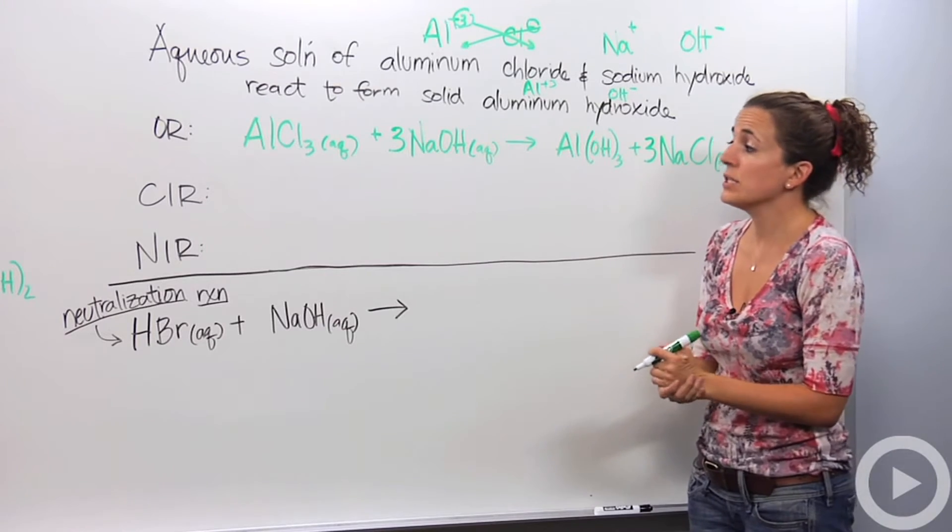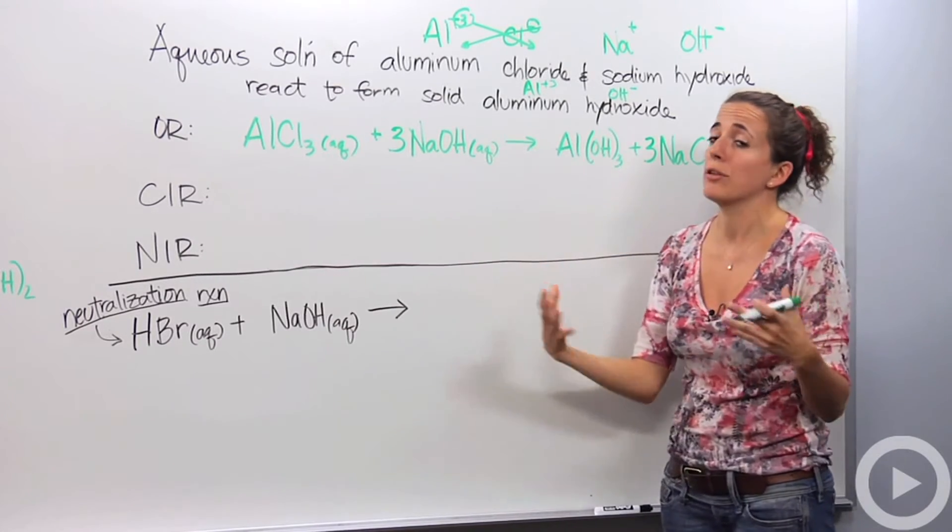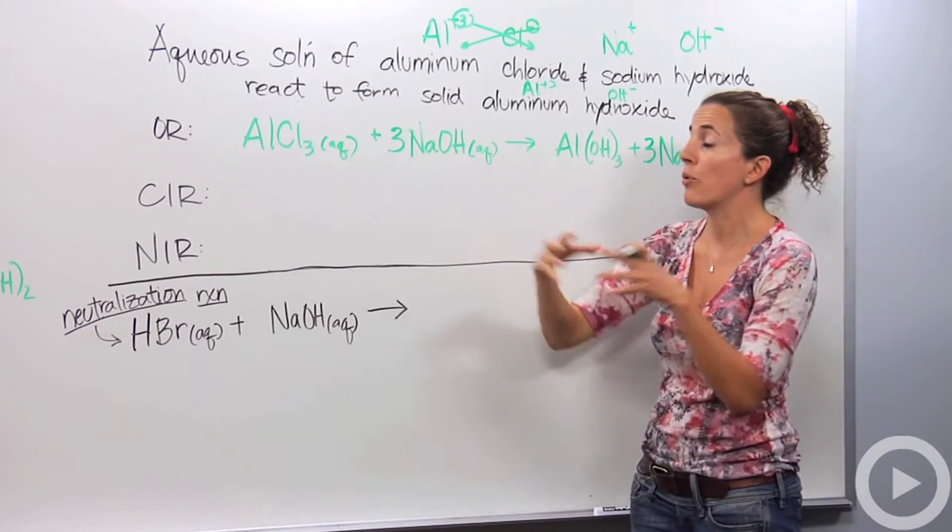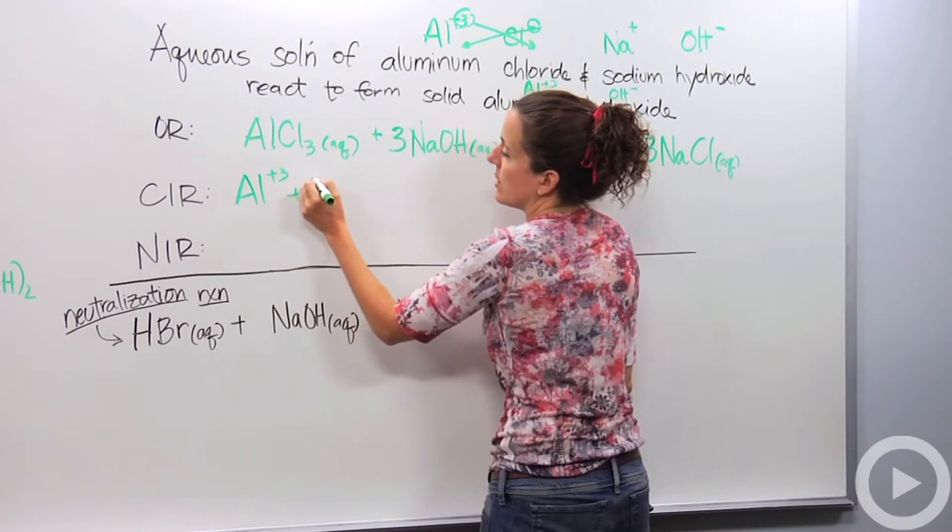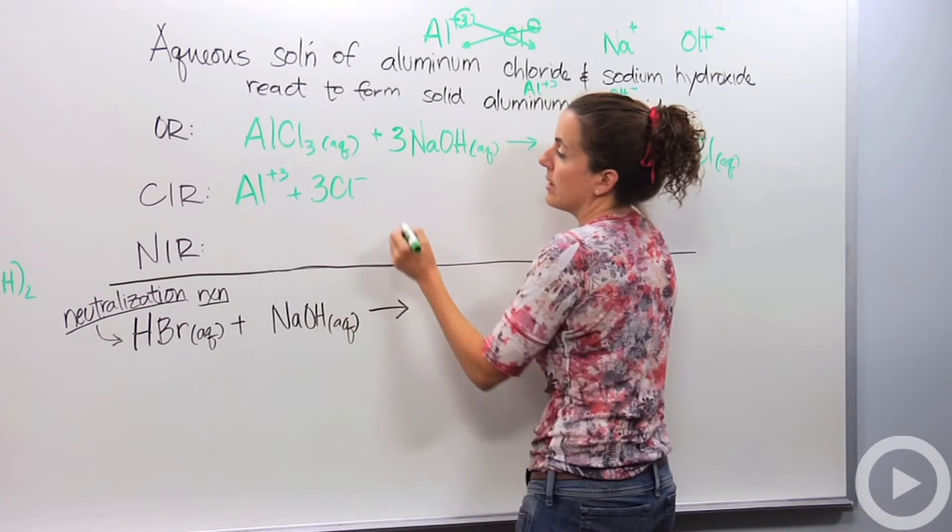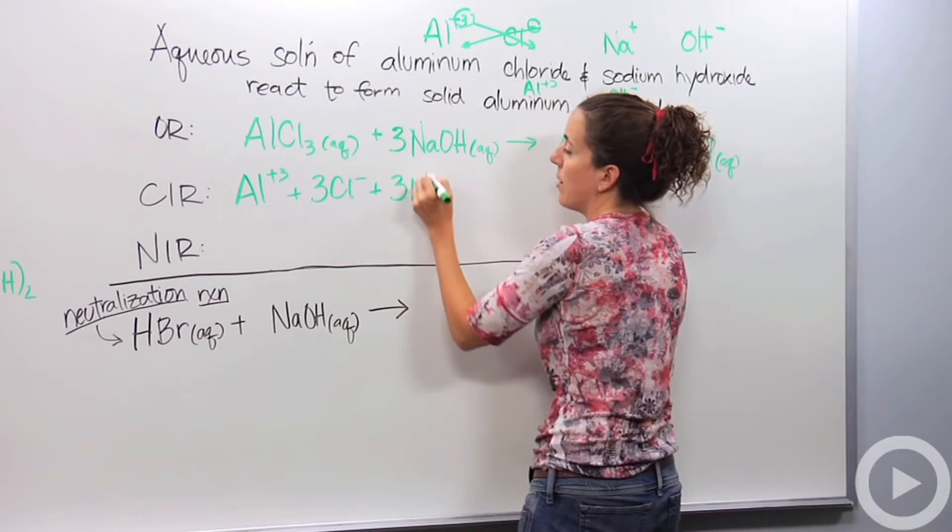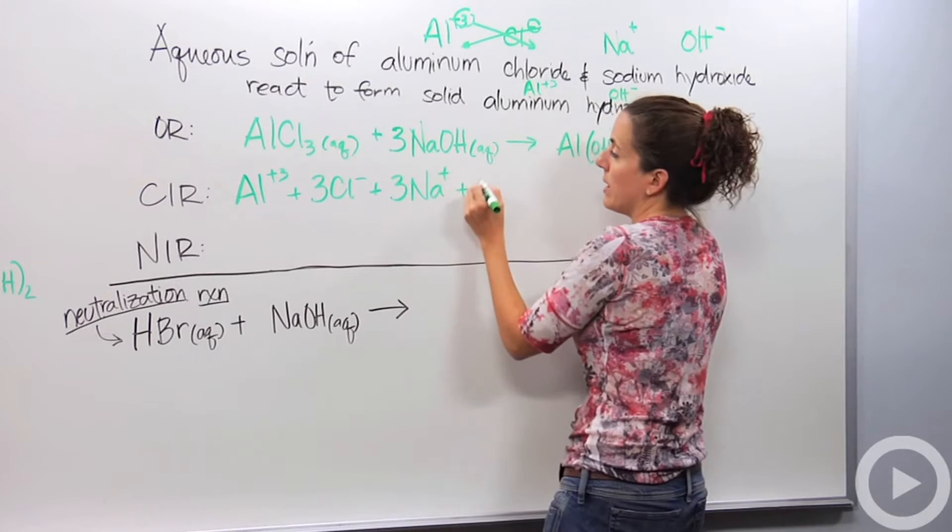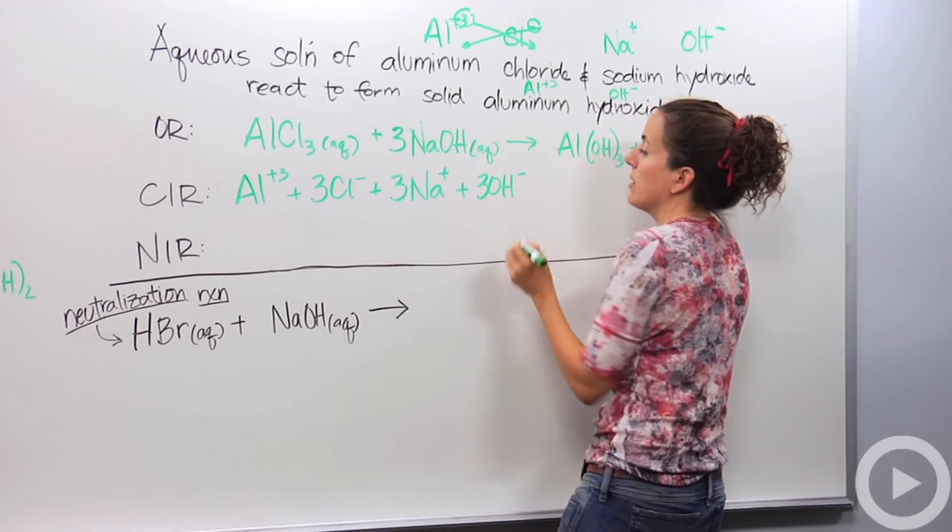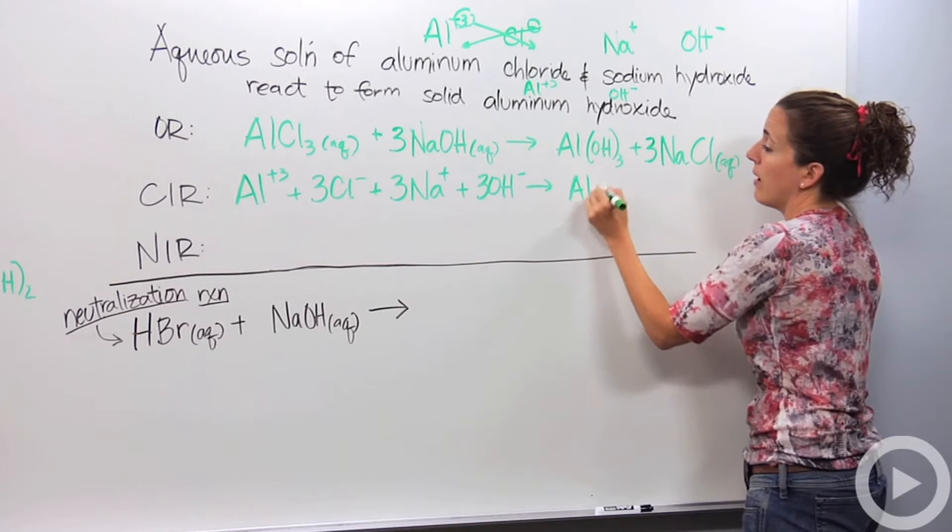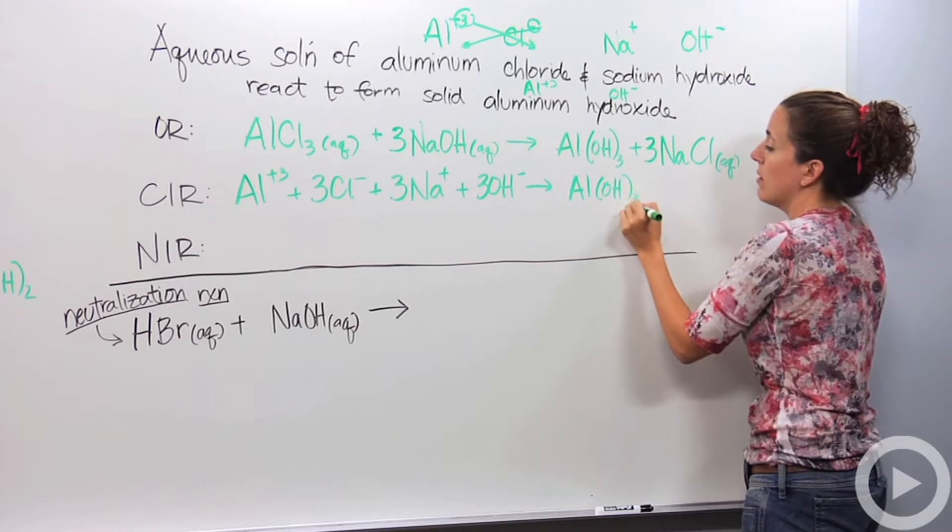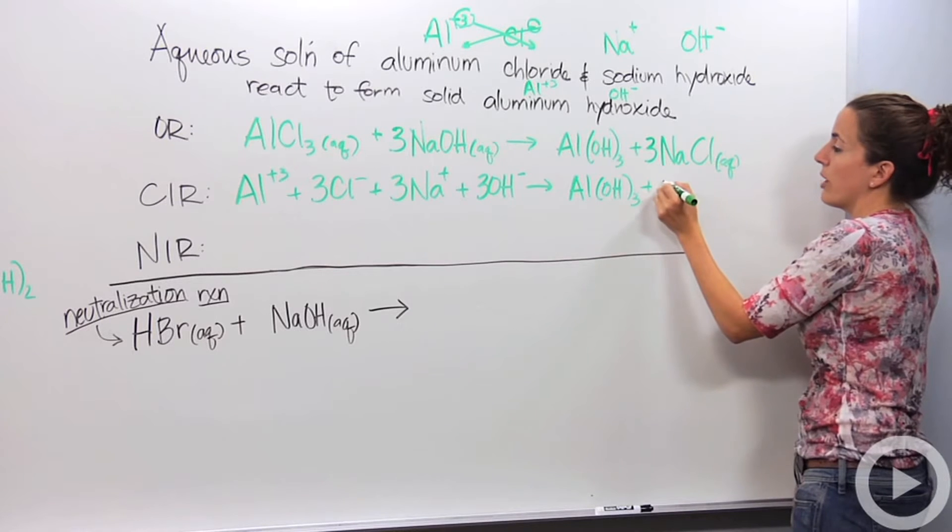Let's do our complete ionic reaction. We have to break it down. Aqueous solution is going to be broken down into its ions. We have Al plus 3, plus 3 Cl minus ions, plus 3 Na plus ions, plus 3 OH minus ions, yields - this is our solid, we're going to keep this together - Al(OH)3. And then this is aqueous, so we're going to break that up: Na plus plus Cl minus.